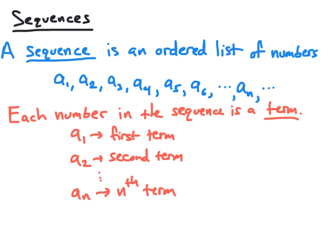a2 will be our second term because it's our second number in our ordered list. And going down the line, we see that a sub n will be called the nth term because it would denote the nth number in our ordered list of numbers.